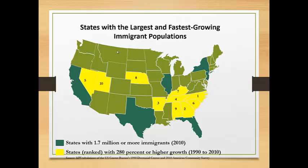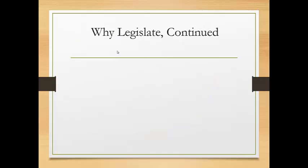The yellow states are those with the largest immigration growth — not just a modest increase, but 280 percent or higher in a 20-year time period. This is really substantial growth and can make people uncomfortable. One of the reasons for new legislation is growth, and particularly growth in areas not accustomed to having immigrants.